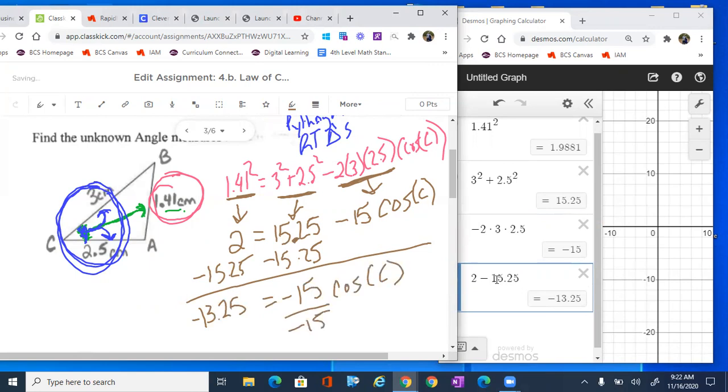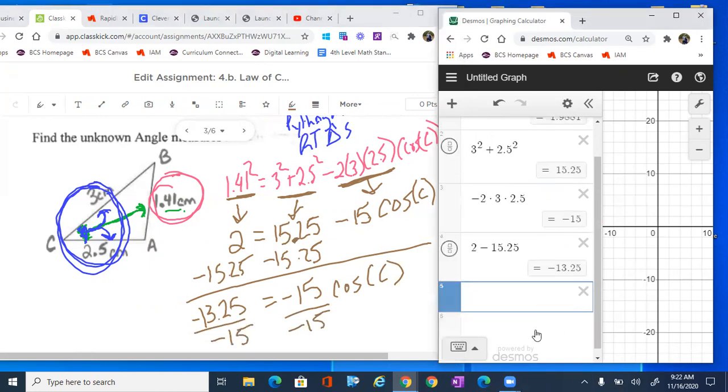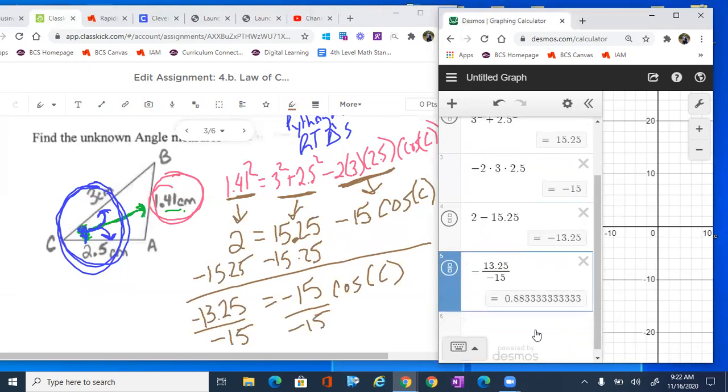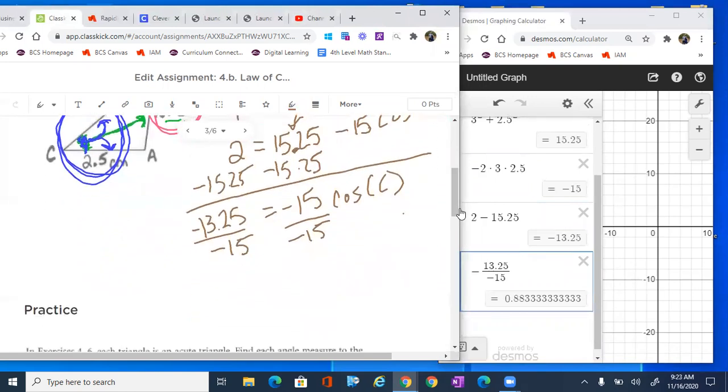I'm gonna divide by negative 15 because it's attached by multiplication. So they're inverses. So let's go ahead and take that negative 13.25 and divide it by negative 15. And that's gonna give me 0.883. So 0.883 equals to cosine of C.